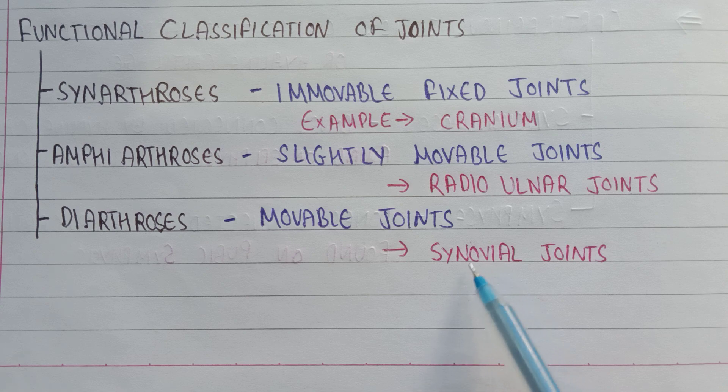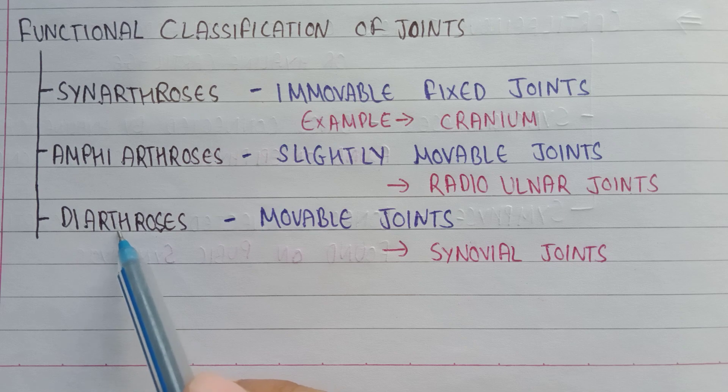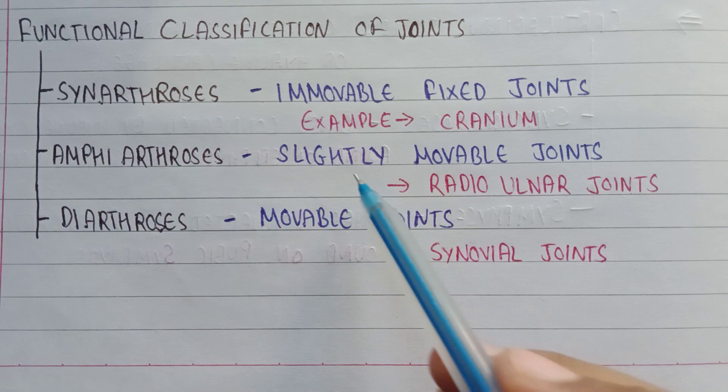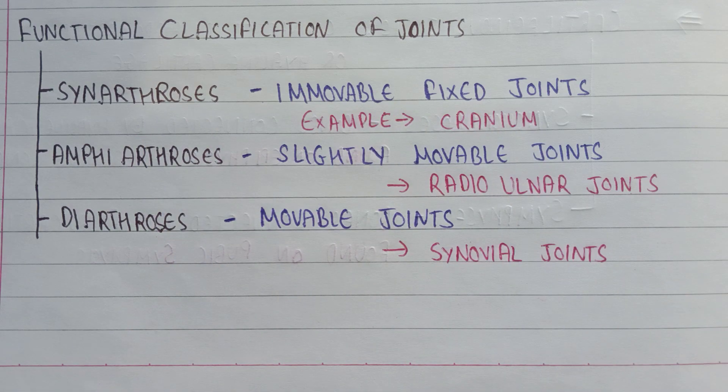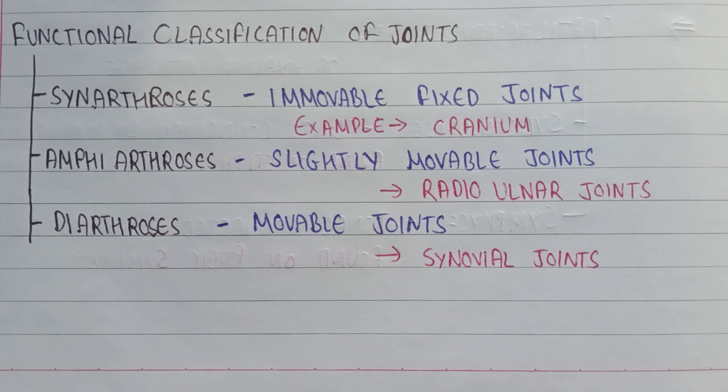It shows many ranges of movement. So in diarthrosis, they are movable joints; amphiarthrosis are slightly movable; and synarthrosis are immovable fixed joints. Now you can take a screenshot of this to remember these types of functional classification of joints.